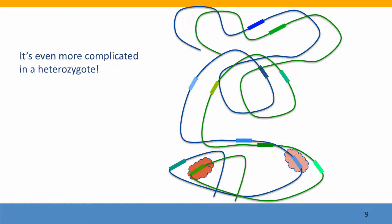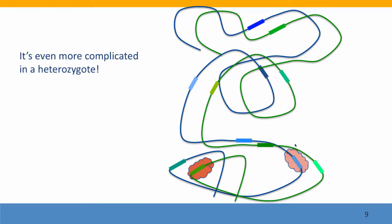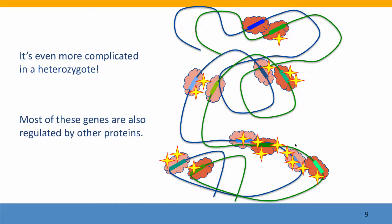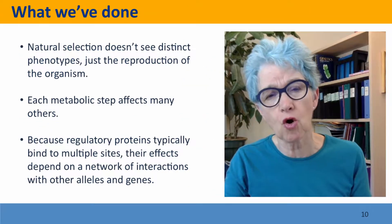It's even more complicated if we think about heterozygotes, because both alleles of the regulatory protein are present in the same cell, and they may compete for binding with the different alleles of each individual binding site, as well as between different binding sites. So there's a complicated network of possible effects depending on which alleles are present. Most of these genes are not just regulated by a single protein — they're typically controlled by two, three, or more different regulatory proteins, each of which may be present in two or more different alleles, so the permutations are enormous.